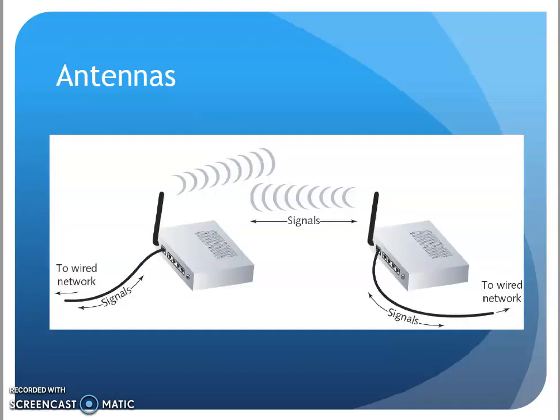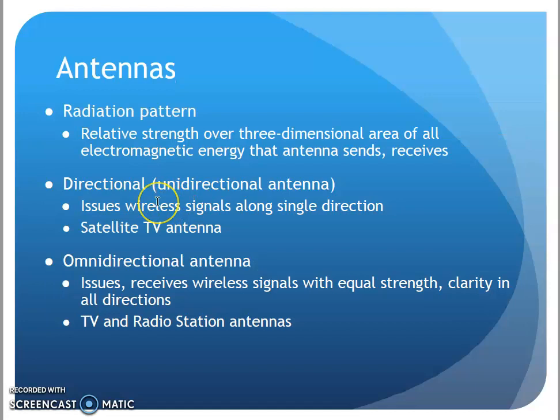When dealing with antennas, we need to talk about radiation patterns — how the antenna broadcasts its energy. There are two main types: directional and omnidirectional. Directional, sometimes called unidirectional, focuses its energy along a path, almost like a flashlight. If you focus a flashlight into a beam, more energy goes forward instead of out to the sides. That's what a directional antenna does.